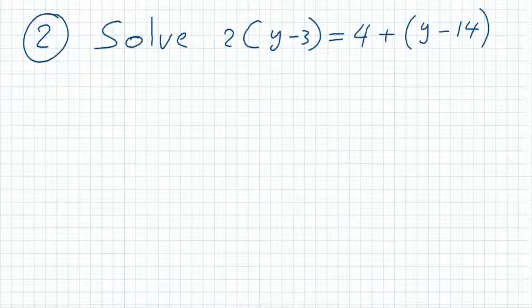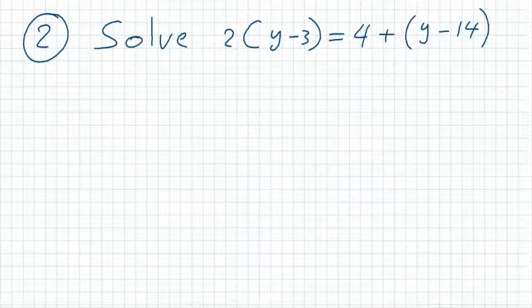Example 2. Solve the equation 2 multiplied by the difference of y and 3 equals 4 plus the difference of y minus 14.